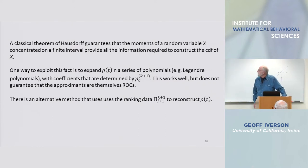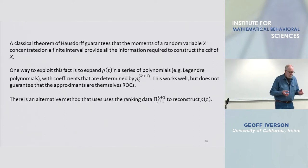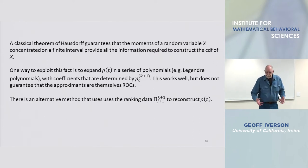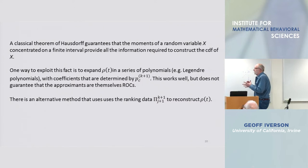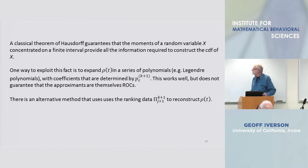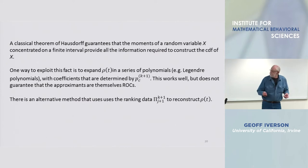One way to do that, and I have done it, is to take the forced choice data, which remember are giving you moments of the random variable for signal V_S, and you can expand the ROC rho in a series of polynomials.